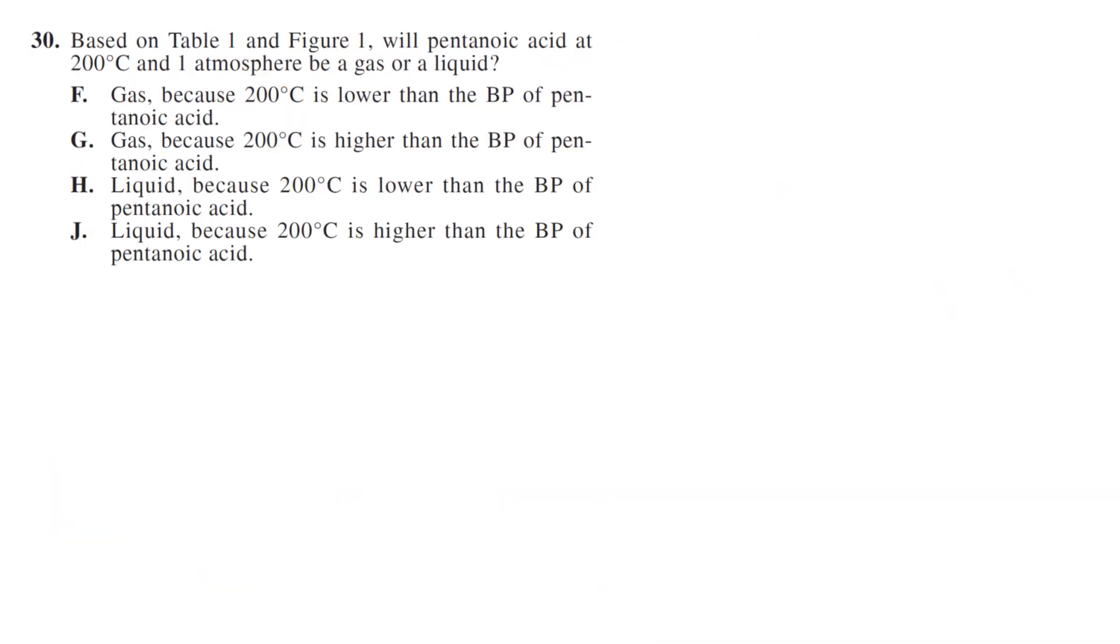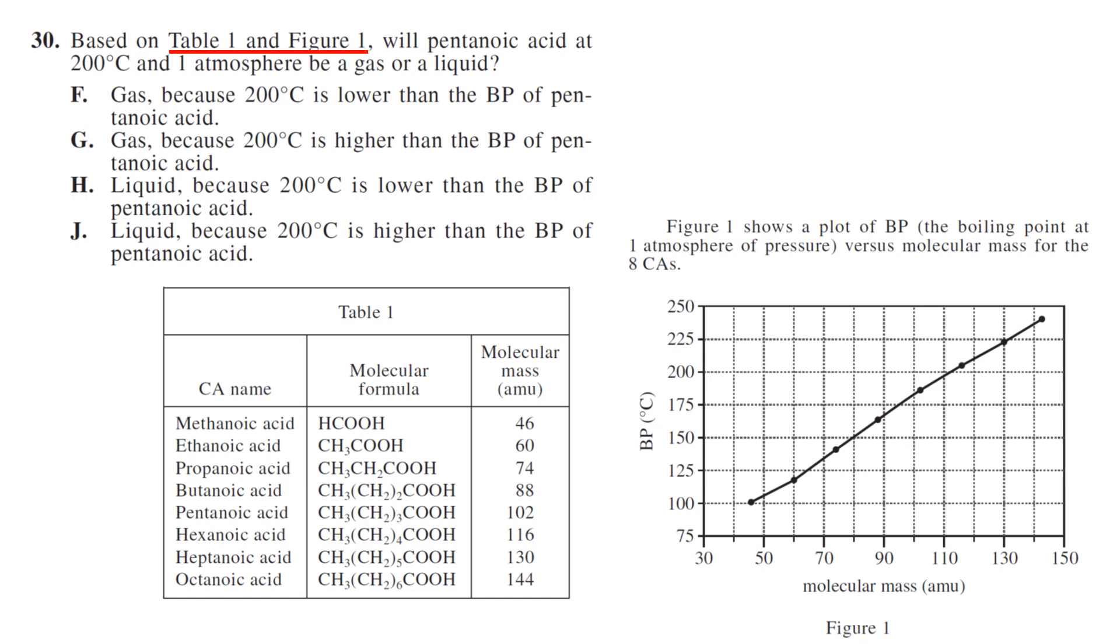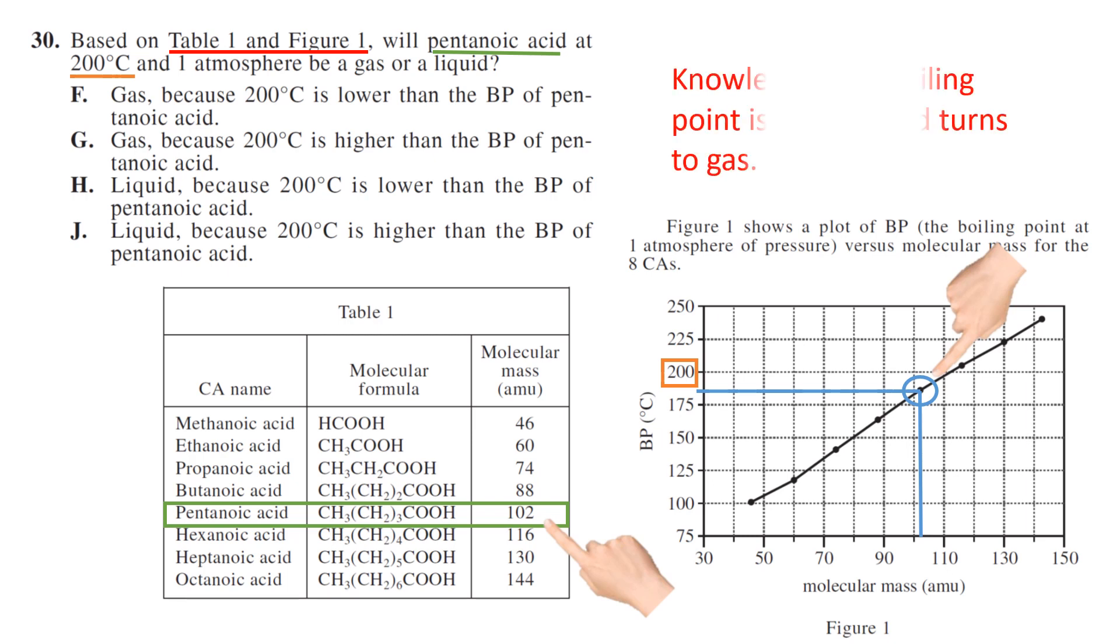Number 30, based on table 1 and figure 1, we're looking at pentanoic acid at 200 degrees boiling points. We're going to put this in a 200 degrees atmospheric condition. So pentanoic acid has a molecular mass of 102. So that means it is here. It's that dot. So its boiling point is going to be less than 200. It will boil at around, looks like 180. So what happens?